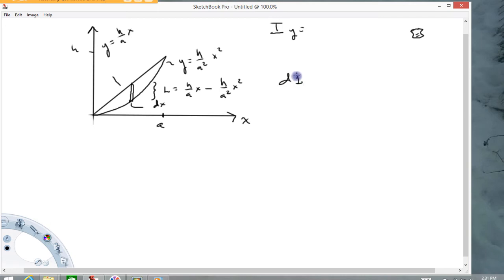All right. So Iy, I'm going to start with this. dIy is going to equal, again, this distance squared. So that's going to be x squared times this thing's area, which it's going to be its length. H over a times x minus h over a squared x squared times its width, dx. So this product gives me the differential moment of inertia of this rectangle about the y axis. Total moment, total moment of inertia, we have to add those all up. In this case, x is running from zero to a. And let's see what we have here. x squared times h over a x minus h over a squared x squared dx. Okay. So now it's just a matter of working the integral out.